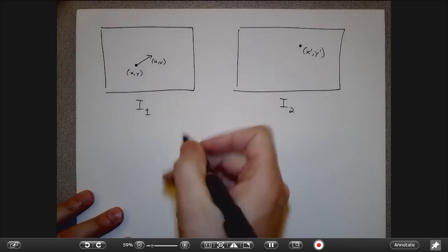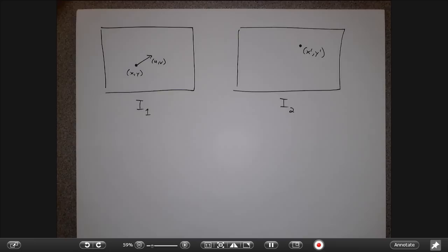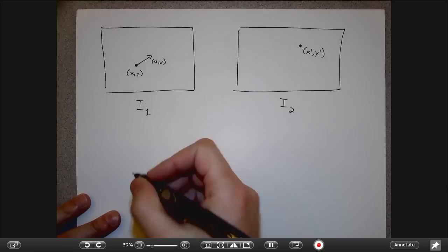So in optical flow, we basically don't put any constraints on what that vector UV could be. We're basically saying that I could hypothetically look anywhere in the second image to find the correspondence for this point.